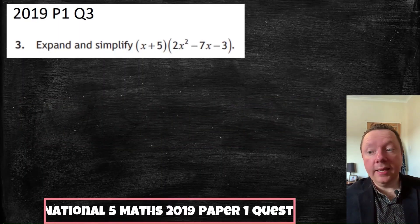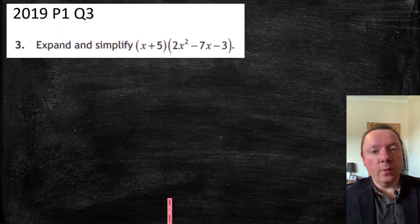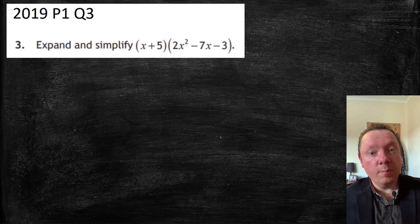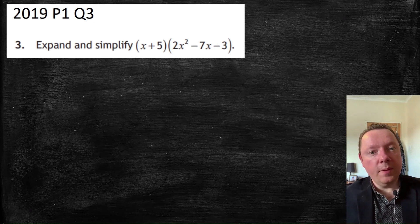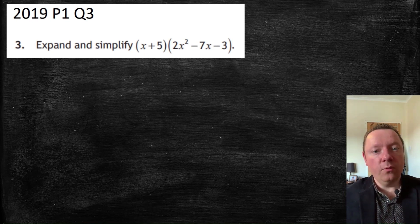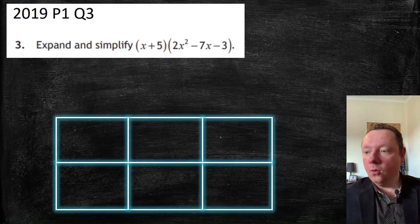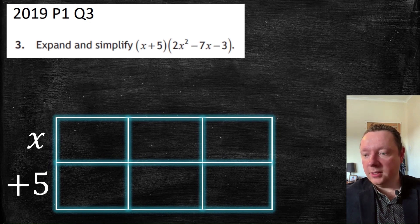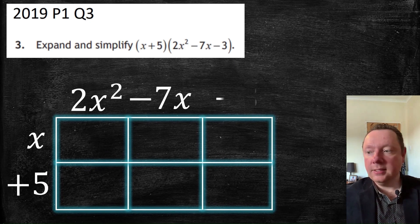National 5 Maths 2019, Paper 1, Question 3. Quite often these questions will come at the start of the paper, nice and easy, or towards the end when you've had to write an expression yourself. We've got (x + 5)(2x² − 7x − 3). I draw my grid — on one side goes x add 5 down the side, and the other side goes 2x squared minus 7x minus 3.